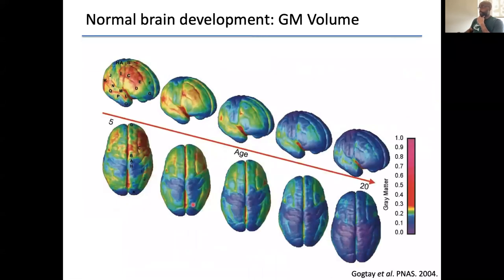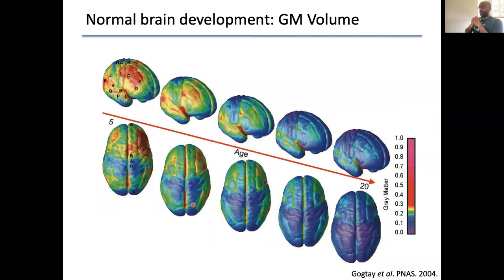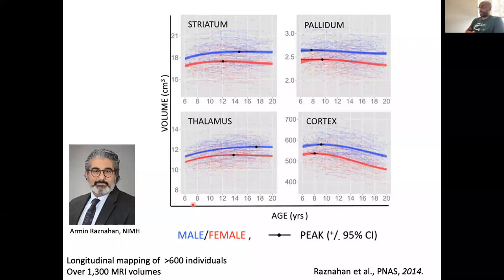First, I'll talk about how we got there. This is a famous picture — we have maps like this for the cortex, and anytime anyone talks about the change in brain structure over the lifespan this is one of the first images that comes up, demonstrating decreased gray matter volume in the cortex over the developmental period from 5 to 20 years old. We did this in collaboration with Dr. Armin Rasnahan at the NIMH, examining over 1,300 volumes from over 600 individuals.